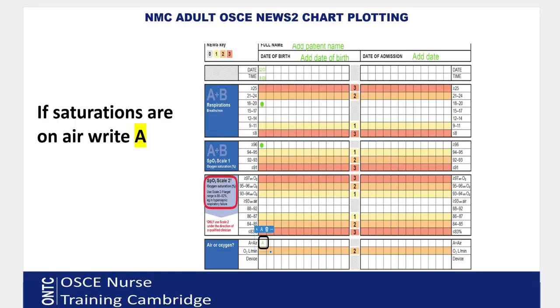Plot the saturations with a dot in the correct box on Scale 1. For example, if the patient's saturation is 96%, place the dot in that box. Then you must indicate whether the saturations were taken on air or on oxygen. If the patient is not wearing any mask or device, they are on air — add a capital A in that box. Leaving it blank is a critical fail.